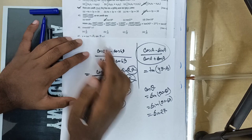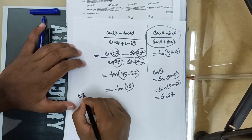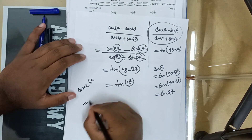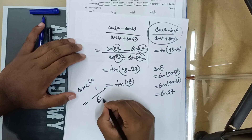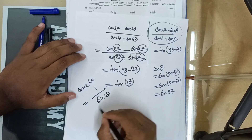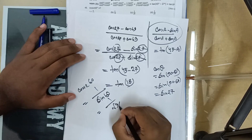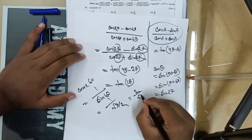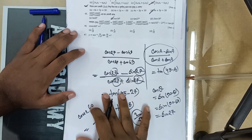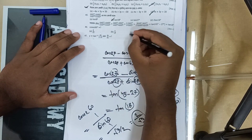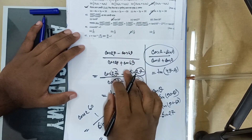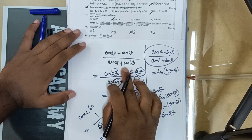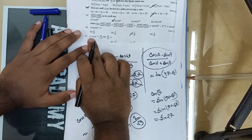For question 46: cos 60 degrees — what is its value? cos 60° equals one by two, and sin 60° equals root 3 divided by 2. Taking the reciprocal, the answer to question 46 is 2 by root 3. This is the answer to 46.